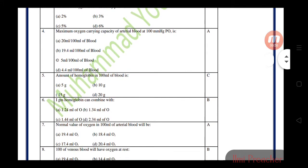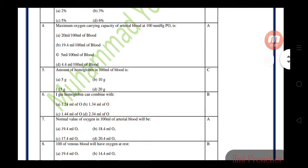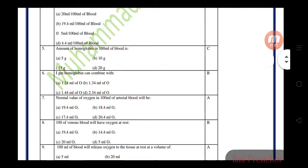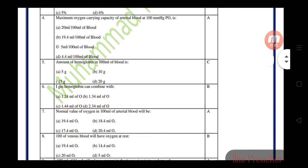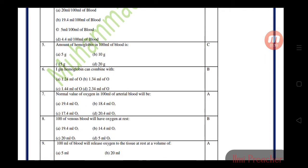Maximum oxygen carrying capacity of arterial blood at 100 mmHg is 20 ml per 100 ml of blood. This means 20 ml oxygen in 100 ml blood. Amount of hemoglobin in 100 ml of blood is 15 grams. One gram of hemoglobin can combine with 1.34 ml of oxygen.